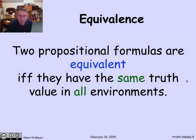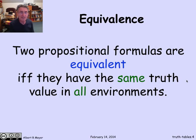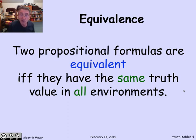A basic idea about propositional formulas is that two of them are equivalent if and only if they have the same truth values in all environments — no matter what the values of the p's and q's and r's are, these two formulas come out to the same truth value. That's what makes them equivalent.